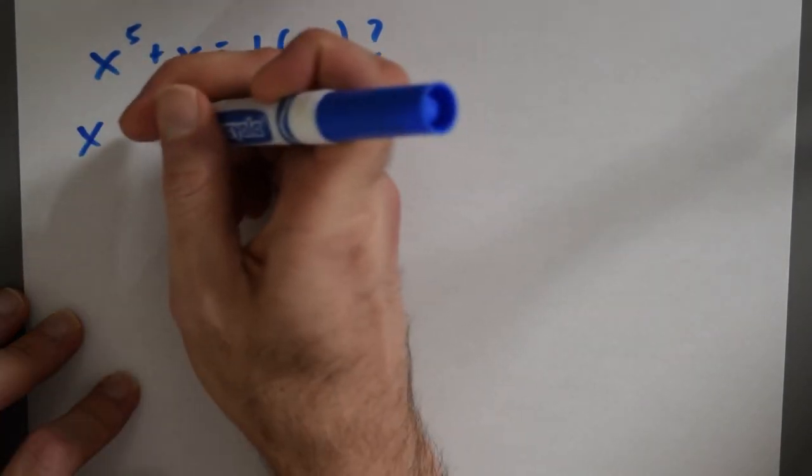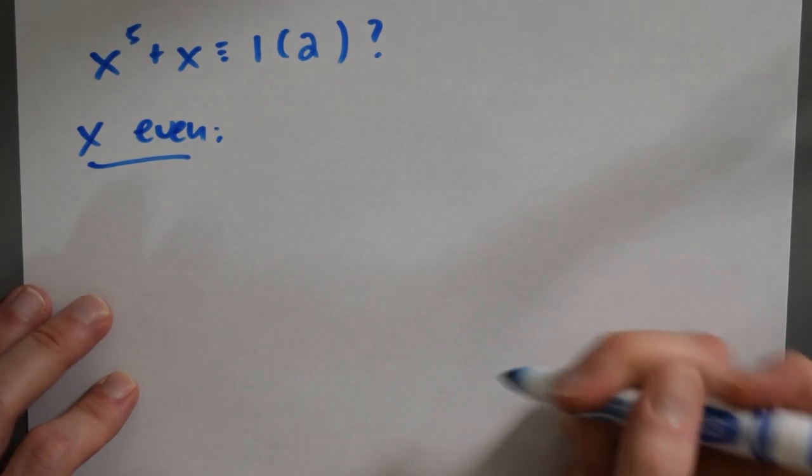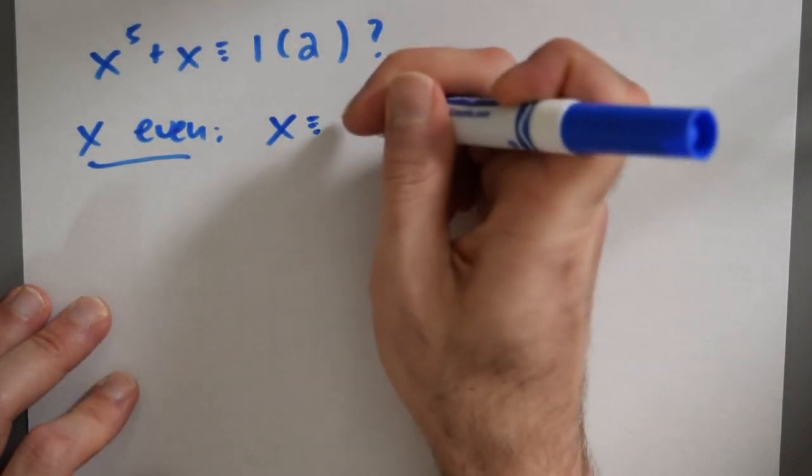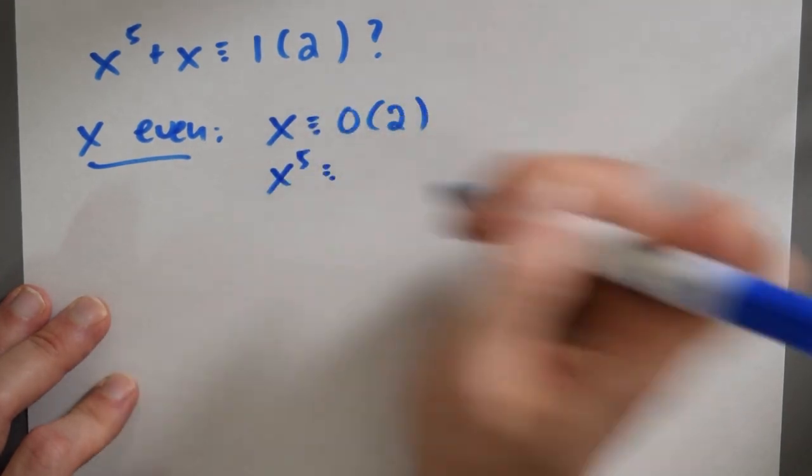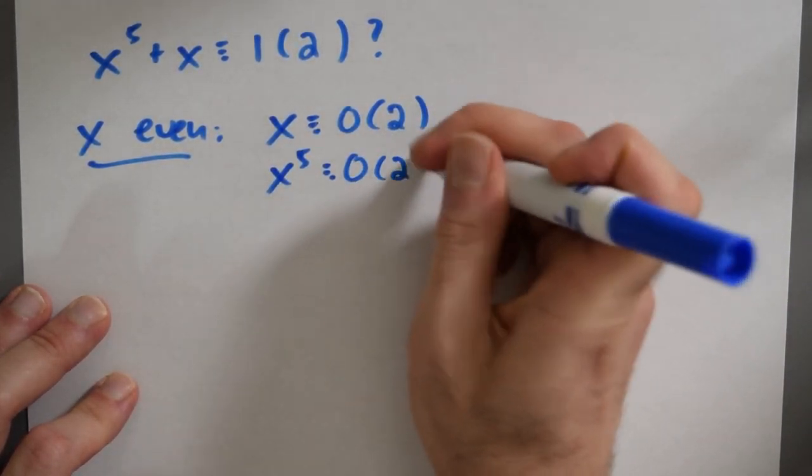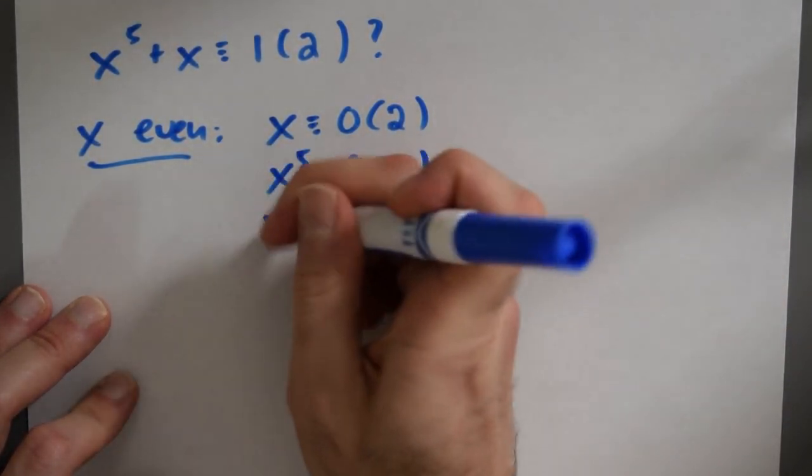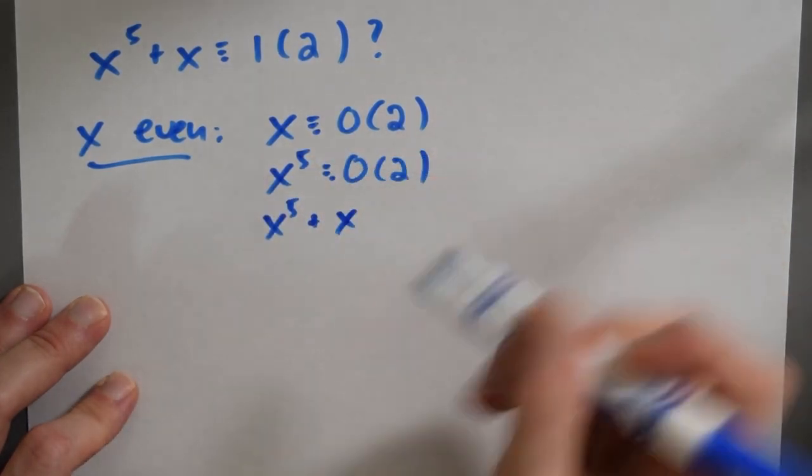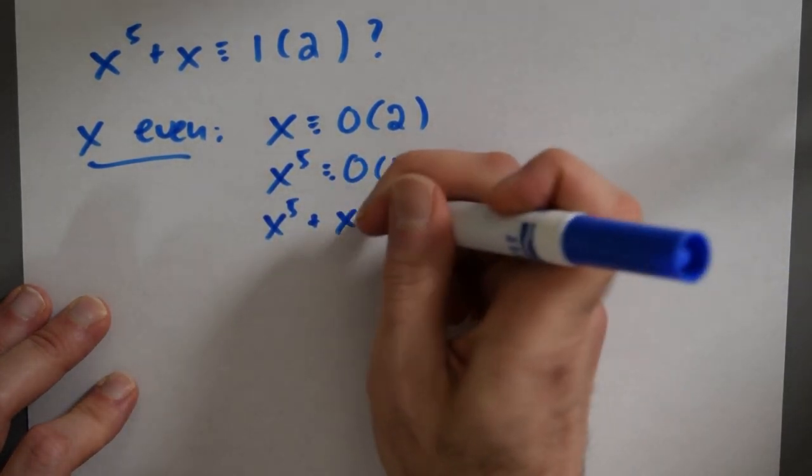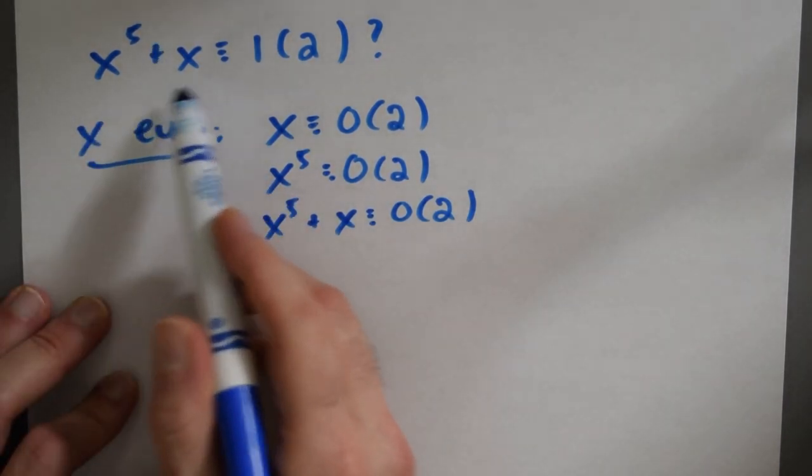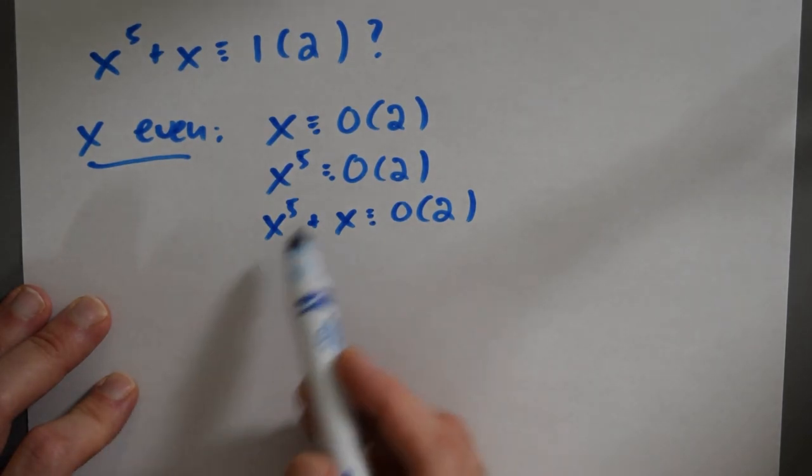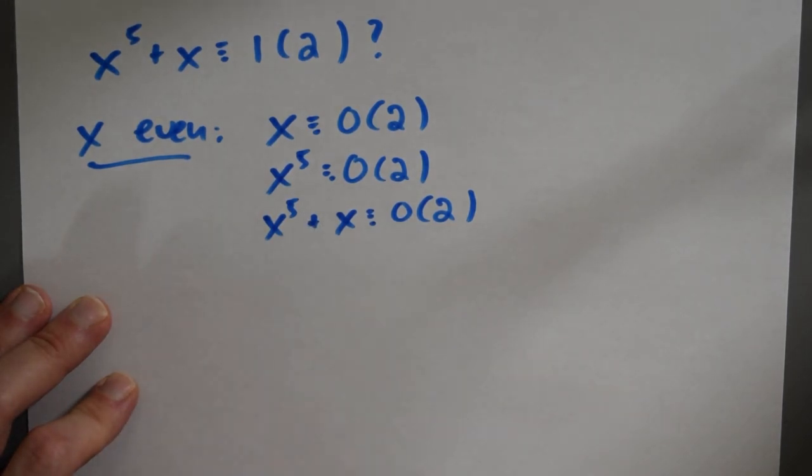So let's think about the situation where X is even. And in this case, X is zero modulo two, X to the fifth is also even if X is even. And that means that X to the fifth plus X is an even number plus an even number, which is even. Well, that's bad news. So if X is even, it can't be that X to the fifth plus X is one mod two, X to the fifth plus X is even.